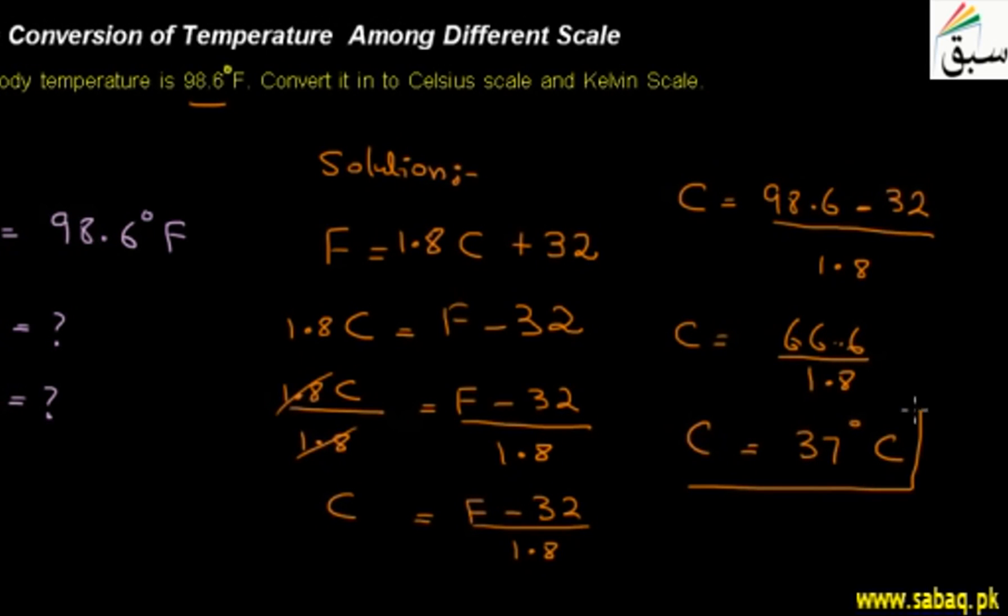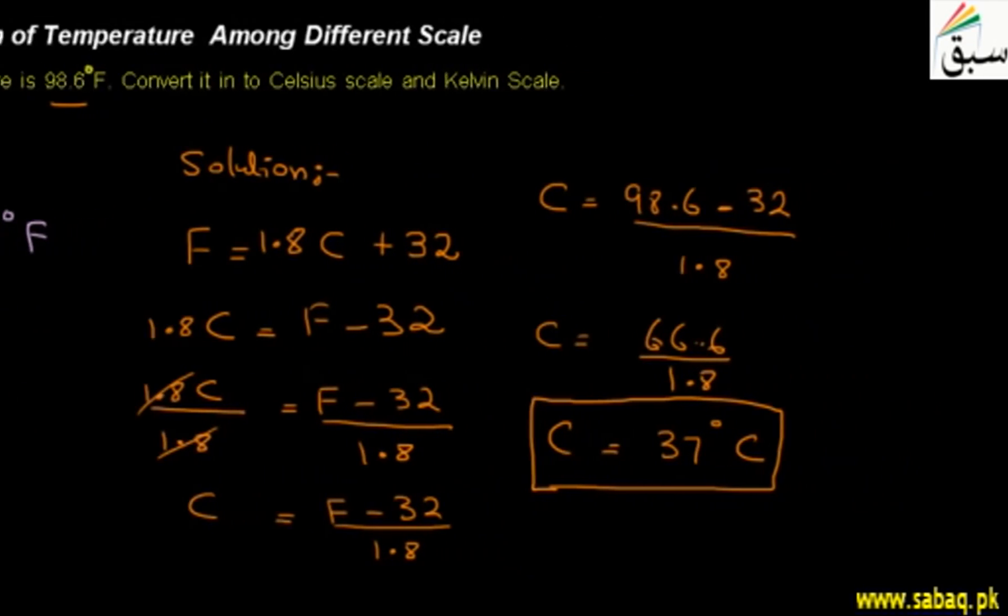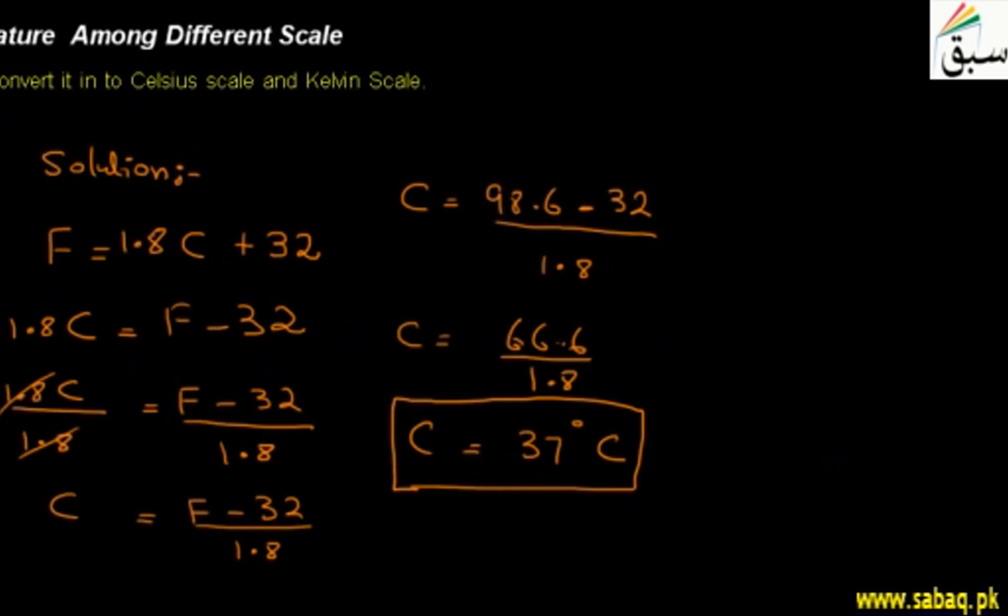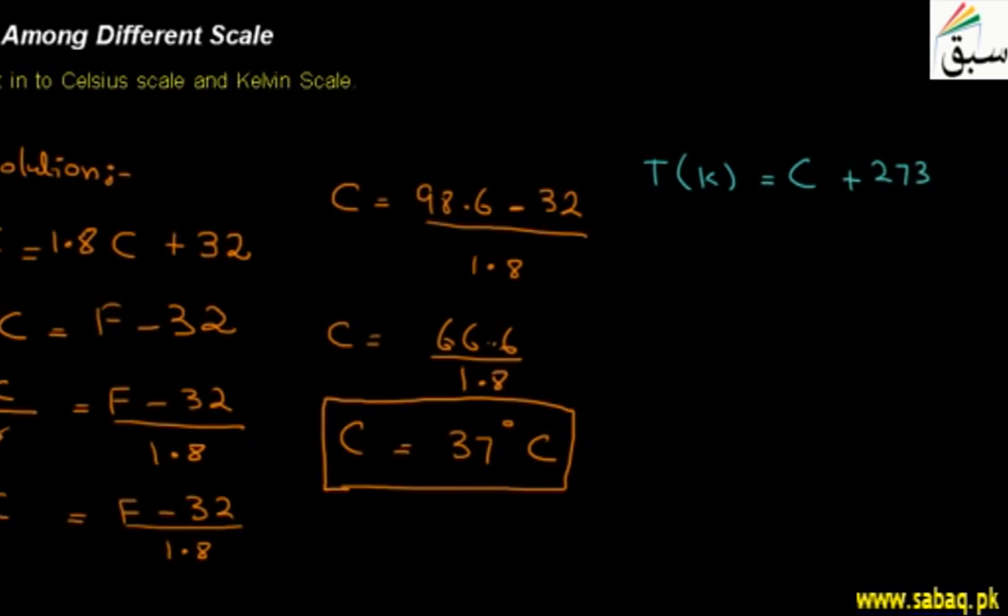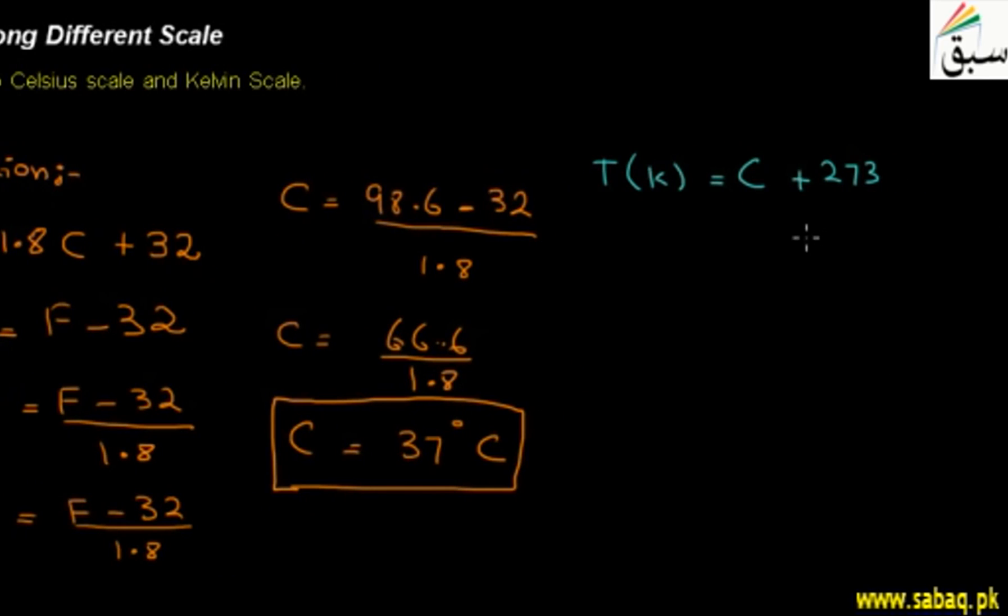Now students have the Celsius scale temperature value. Now you have to convert this temperature to Kelvin. What will we do for Kelvin? Students, we have also studied a formula for Kelvin. Temperature in Kelvin is equal to Celsius plus 273. This is our formula.